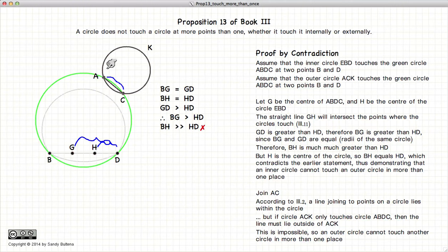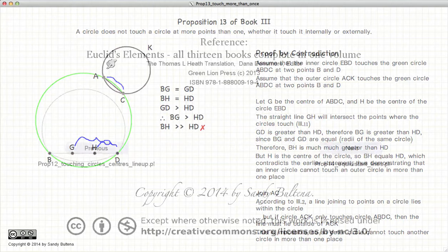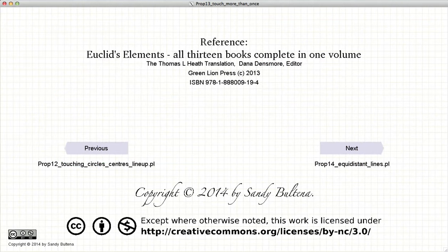So there we have shown that two circles can only touch each other at one point. And that concludes this video presentation. To see the next presentation, just click the Next button.